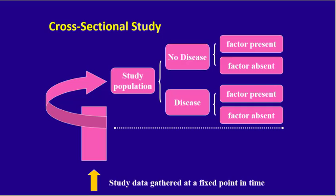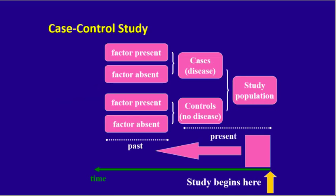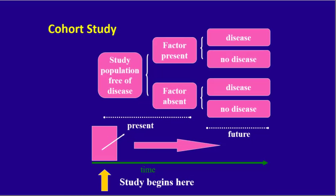A graphical summary of a cross-sectional study is provided here — students should view this graphic to confirm their understanding. A graphical summary of a case-control study is also provided — students should view this graphic to confirm their understanding. A graphical summary of a cohort study is provided here — students should view this graphic on their own to confirm their understanding based on the previous slides.